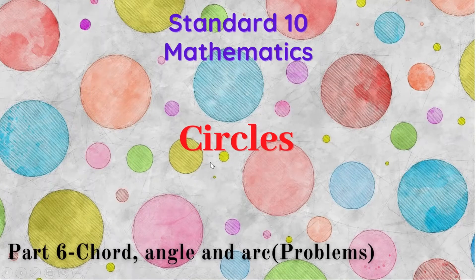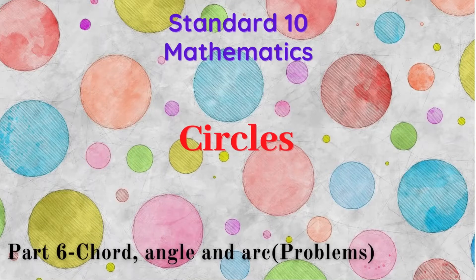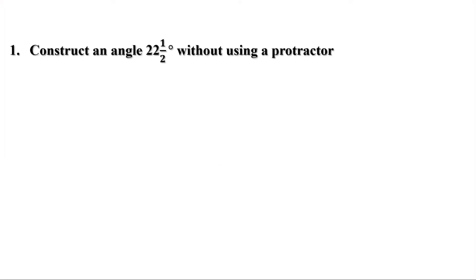Welcome to Maths Companion. In the last video we discussed how to halve an angle and how to draw a triangle when three angles and the circumradius are given. Now let us check the answers of the homework. First question: construct an angle of 22 and a half degrees without using a protractor.